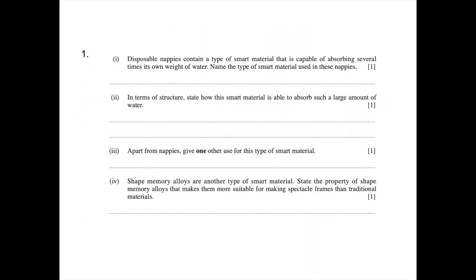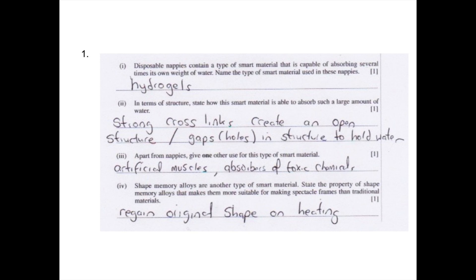Here's the first question. The first part is asking you to name the type of smart material used in nappies. The second part is asking you to state how this smart material is able to absorb such a large amount of water in terms of its structure. The third part is asking you to give another use of this type of smart material. And the last part is asking you to state the property of shape memory alloys that makes them more suitable for making spectacle frames than traditional materials. Pause the video and have a go at the question.